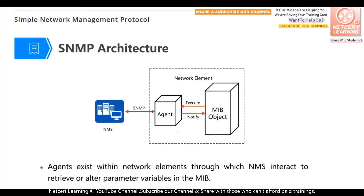This is the SNMP architecture. We have three elements in this architecture. First is NMS — the NMS is like a software installed on a server, so it is a kind of software system. Second is the network element, like a switch, router, or firewall — it's a network device. On the device, we have an agent. The agent is like a process running on the network device. And we also have a MIB object. MIB means management information base, and in this management information base we have the whole information of the network devices.